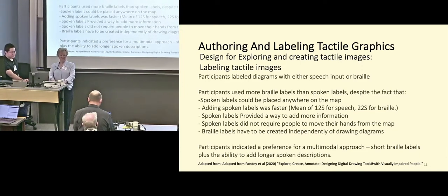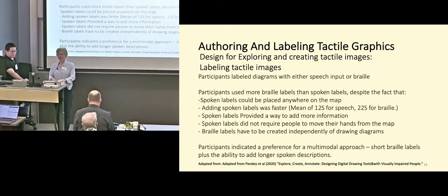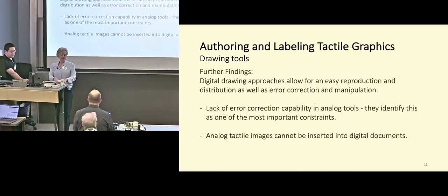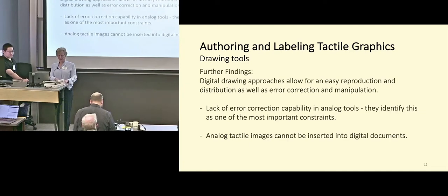Braille labels also had to be created independently using a separate technique — a braille labeler or rolling the diagram through a brailling machine afterward. The ultimate preference was using very short braille labels to orient on the image, combined with audio layering for additional information — essentially combining both methods. Participants also wanted to move toward digital images for the same reasons sighted people prefer them: easy reproduction, easy distribution, simpler error correction, and the ability to insert them into documents — none of which are possible with analog tactile images.